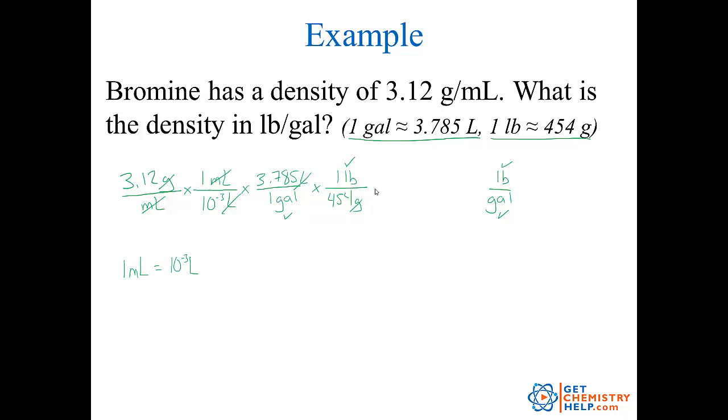So now I just have to go through and perform the operations on my calculator. So remember anything on top, you multiply by. Anything on the bottom of the conversion is divided by. So this would be 3.12 divided by 10 to the negative third times 3.785 divided by 454. So I went ahead and did that on my calculator and I got 26.01145 pounds per gallon.